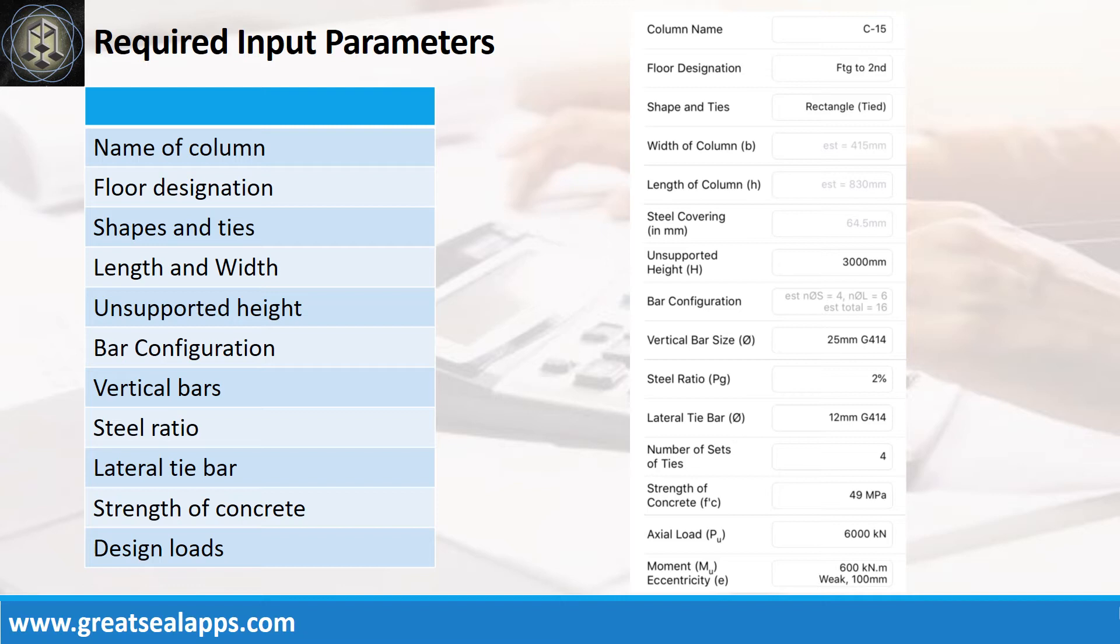Unsupported height 3000 mm, vertical bars 25mm bar at grade 414, steel ratio 2%, lateral tie bars 12mm bar at grade 414, strength of concrete 49 MPa, factored axial load 6,000 kN, factored moment 600 kNm and eccentricity 100 mm at weak axis.